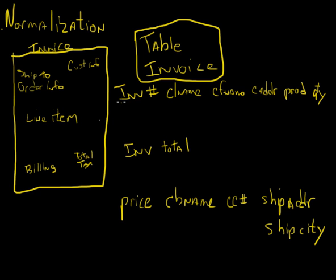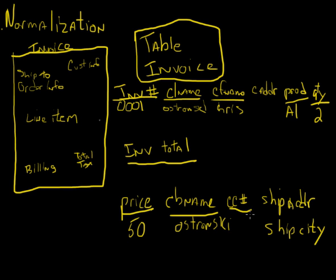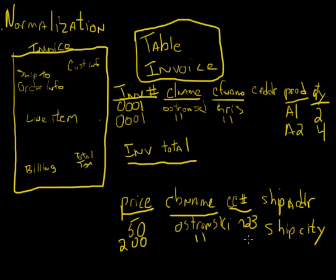For example, invoice 0001, last name Ostrowski, first name Chris, address, product A1, quantity of two, price $50, billing name same, credit card number 123. Then for a second line item, I'd have invoice 0001, Ostrowski again, Chris again, product A2, quantity four, price $200, billing name Ostrowski again, credit card number, ship-to address, ship-to city — I'm going to have that information over and over again.